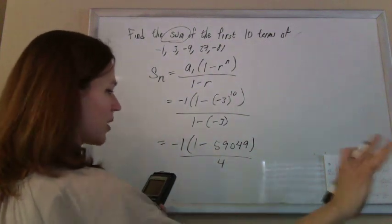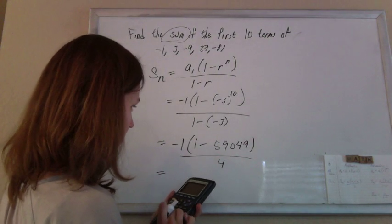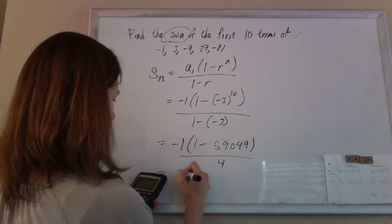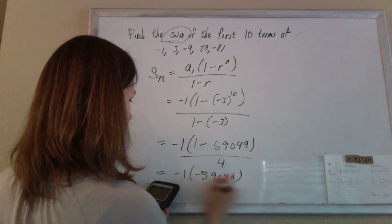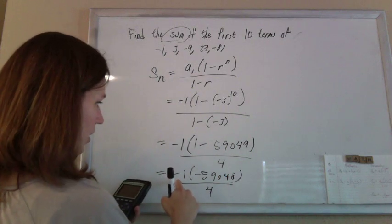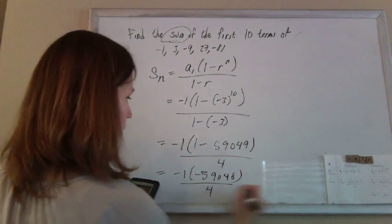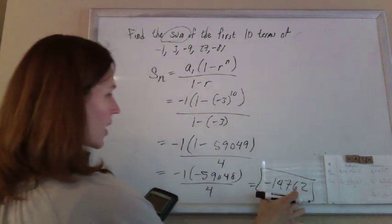That's 1 minus 59049, which is negative 1 times negative 59048 divided by 4. Negative times negative makes a positive, so just divide that by 4 and I get negative 14762. That should be my answer.